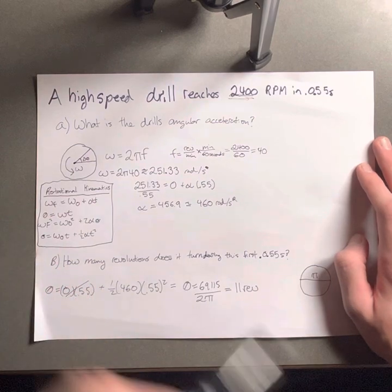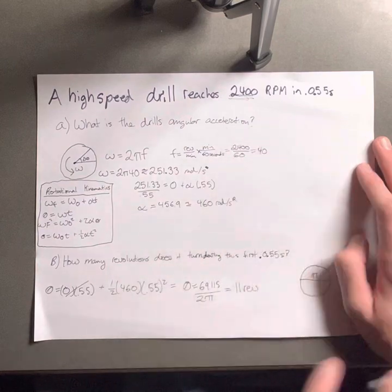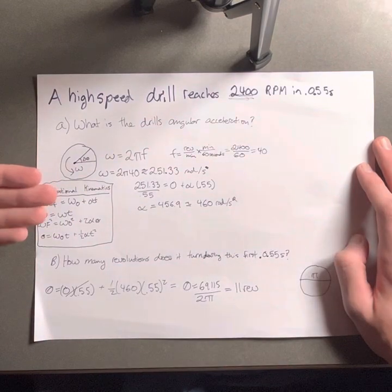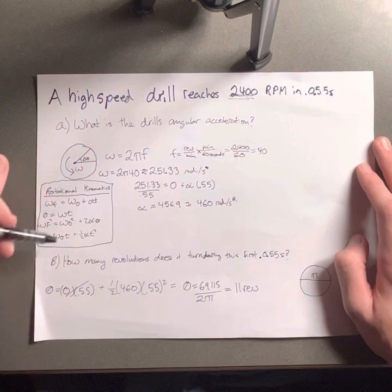We're going to assume - it says reaches 2400 in 0.55 seconds - so the angular velocity at the start is going to be 0, so that will cancel out.